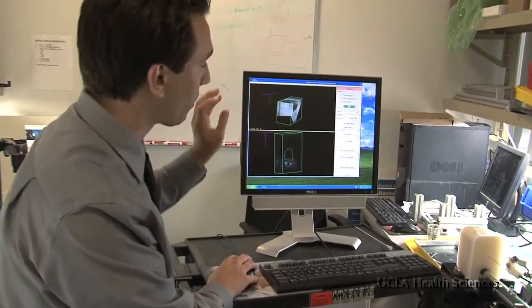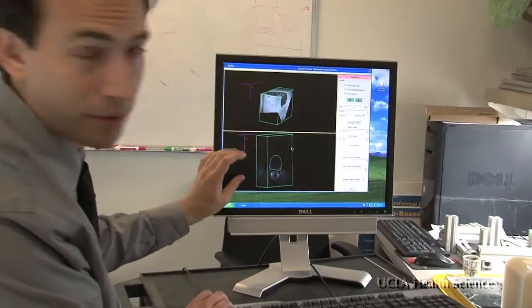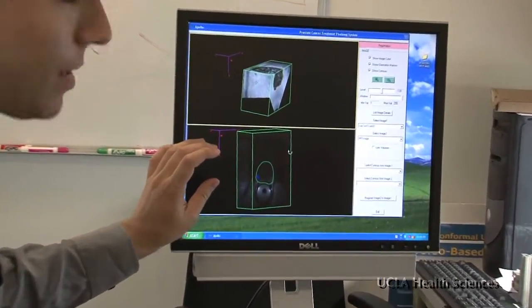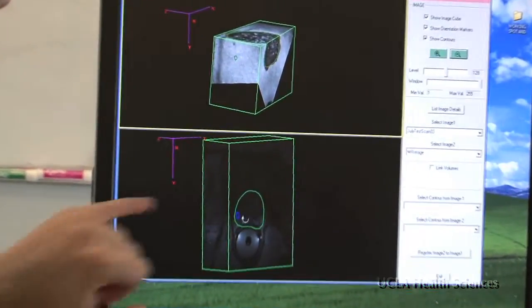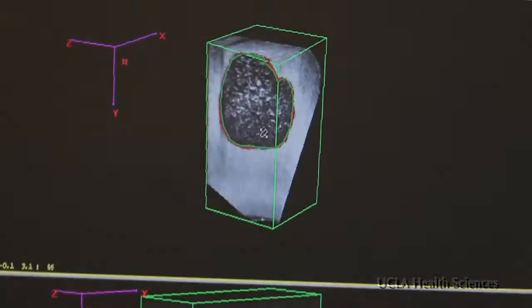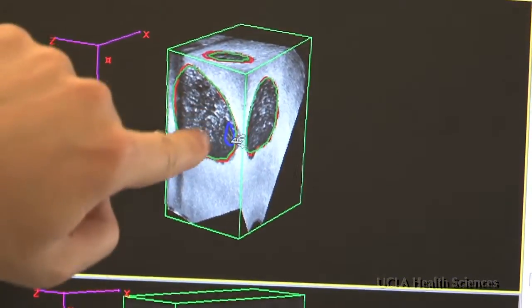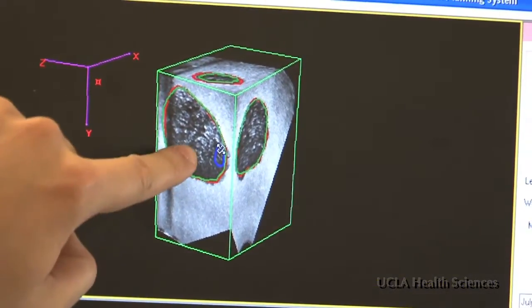Here we have two three-dimensional images: the ultrasound image of what we're doing to the patient right now and the MRI image taken by a radiologist ahead of time so we can see the cancer. By fusing these two images together, we can reestablish the exact location of the patient's tumor in the doctor's office.